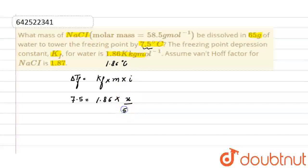Molecular weight is given as 58.5 into 1000 divided by weight of solvent, which is 65, and van't Hoff factor is 1.87. After solving, mass of NaCl required is 8.199 grams.